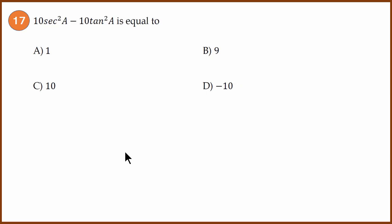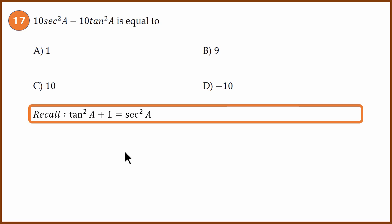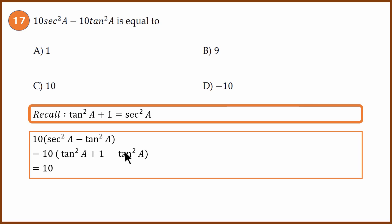Question 17: Identity question. We know that 1 + tan² θ = sec² θ. What is given is 10(sec² A - tan² A). The sec² A can be written as 1 + tan² A. So (tan² A + 1) - tan² A. Tan² A gets cancelled, 1 is remaining. Answer is 10 × 1, which is 10. Option C.